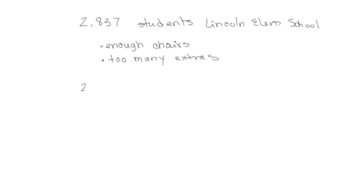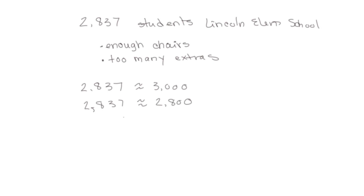Let's look at some options. We could round to the 1,000s place. Between 2,000 and 3,000, this would round to 3,000 — giving us enough chairs, but we'd be ordering quite a few extras that cost a lot of money. Let's see what happens when we round to the 100s place. The 800 stays at 800 since it's closer to 800, so that would be our estimate.